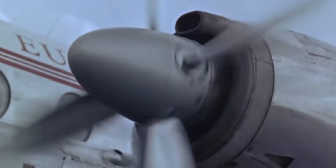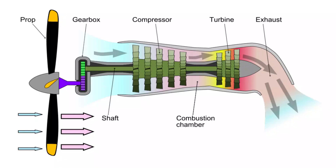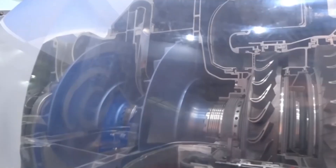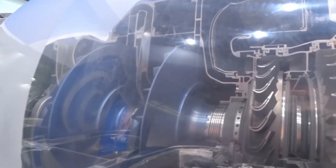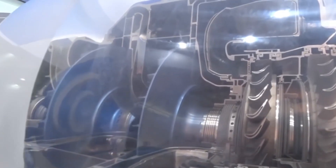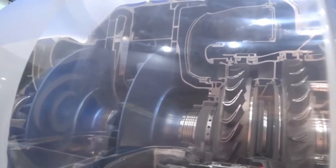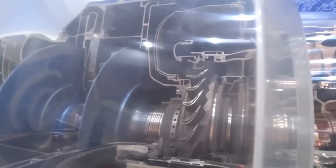A turboprop consists of an intake, reduction gearbox, compressor, combustor, turbine, and a propelling nozzle. Air enters the intake and is compressed by the compressor. Fuel is then added to the compressed air in the combustor, where the fuel-air mixture then combusts.